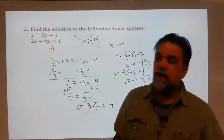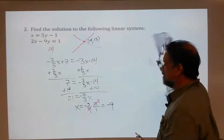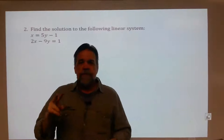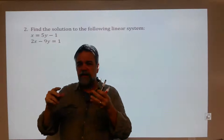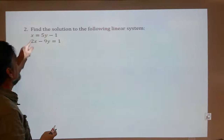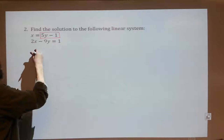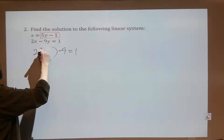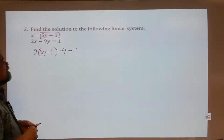When you see a problem that says 'find the solution to the following linear system,' it's the same as finding the intersection point of those two lines. We have two main strategies: substitution and elimination. The last problem used substitution because I had y equals something and replaced that y. I'll do the same here. I have x equals five y minus one, so in my next equation, instead of saying x, I'll refer to what x equals. I have two x minus nine equals one — what's x? It's five y minus one.